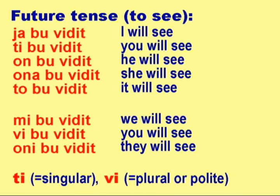Future tense — To see: YA BU VIDIT, TI BU VIDIT, ON BU VIDIT, ONA BU VIDIT, TO BU VIDIT, MI BU VIDIT, VI BU VIDIT, ONI BU VIDIT.